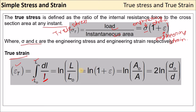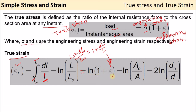From that formula: l = l₀ + Δl, divide by l₀ to get 1 + Δl/l₀. Since Δl/l₀ is engineering strain μ, the true strain becomes ln(1 + μ).